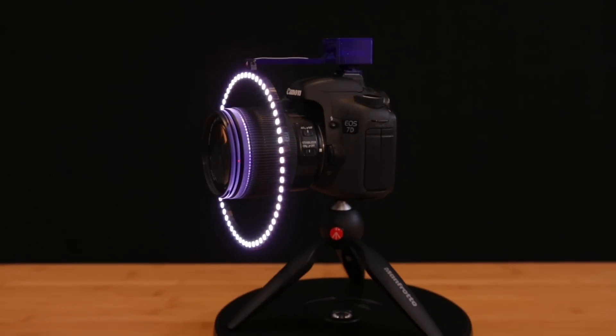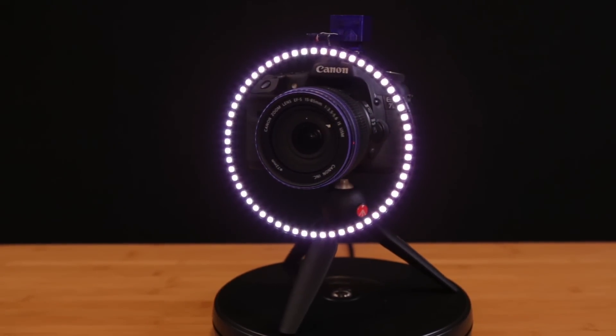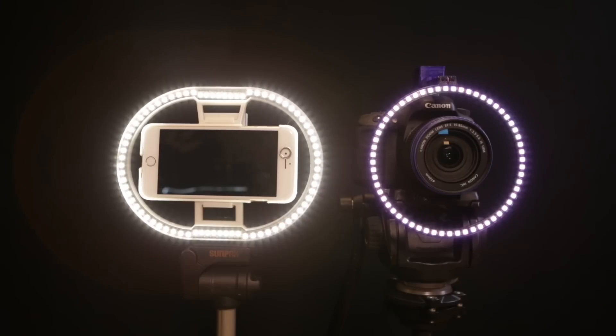In a previous project, we made a light ring for DSLR cameras using a 60 NeoPixel ring. This new version uses RGBW type NeoPixels, which produces much better lighting.